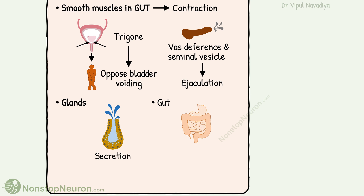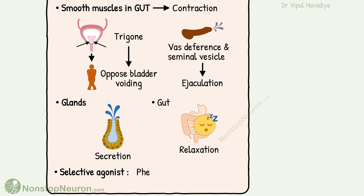And finally, they are also found in the gut, where they cause relaxation. An example of a selective agonist for the alpha-1 receptor is phenylephrine, and a selective antagonist is prazosin. So this was the alpha-1 receptor.